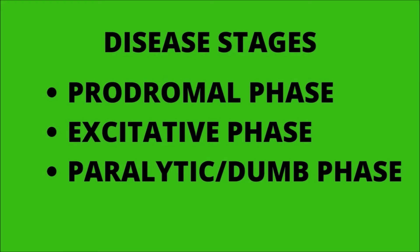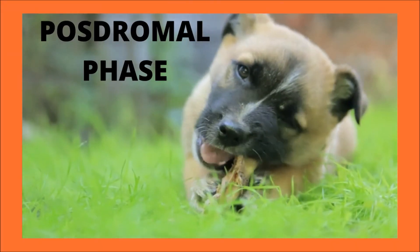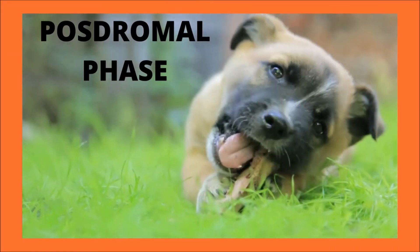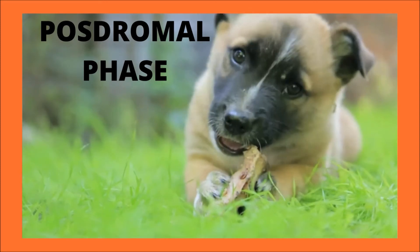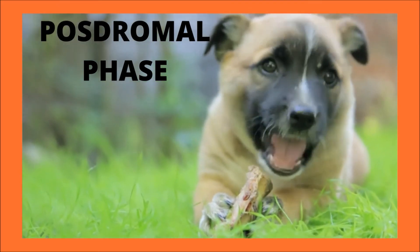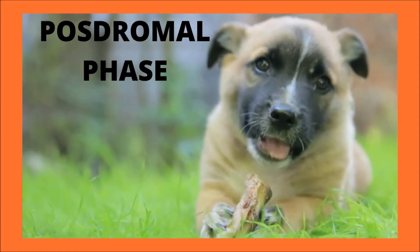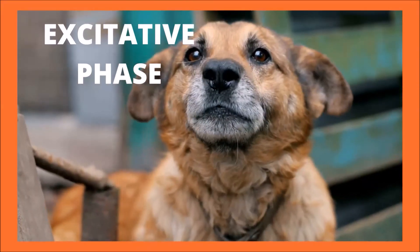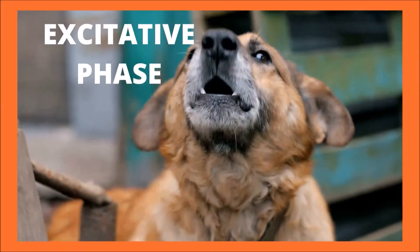The infection with the rabies virus in dogs progresses in three phases: the prodromal phase, the excitative phase, and the paralytic or dumb phase. The prodromal phase is the initial phase, lasting two to three days, and can cause a typically friendly dog to isolate itself and/or become irritable. The dog may or may not become febrile.